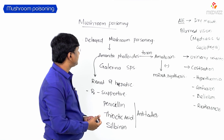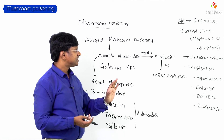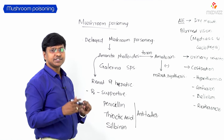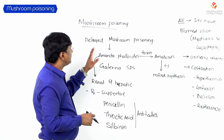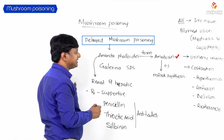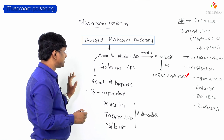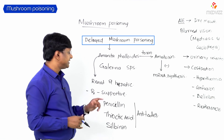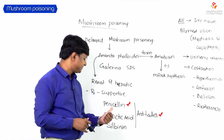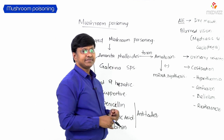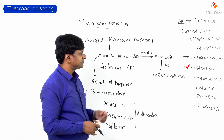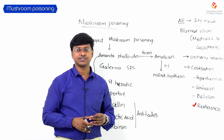In summary, mushroom poisoning or mycetism has two types: early mushroom poisoning with symptom onset within 30 minutes, and delayed mushroom poisoning caused by Amanita phalloides and Galerina species. The toxin is amatoxin, which inhibits mRNA synthesis, causing hepatic and renal dysfunction. Treatment is supportive; antidotes are penicillin, thioctic acid, and silibinin. Adverse effects include dry mouth, blurred vision from mydriasis and cycloplegia, urinary retention, constipation, hyperthermia, confusion, delirium, and restlessness.